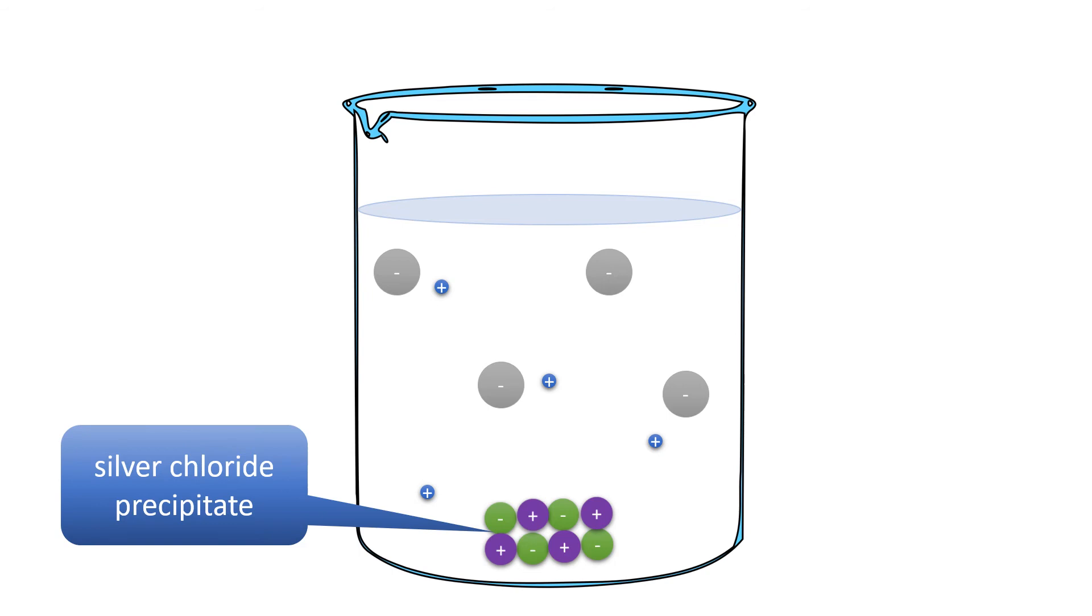We call that a silver chloride precipitate because it precipitates or falls out of the solution. So we have a chemical reaction. We have a new substance that wasn't there at the beginning.